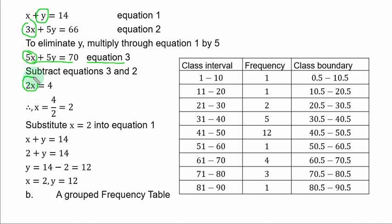70 minus 66. You have 4. Divide both sides by 2, x is equal to 4 over 2. And that is 2. To get y, you simply replace x with 2 in equation 1. You can as well use equation 2. Equation 1 is this. And x is 2. You have 2 plus y equal to 14. Collect like terms. y is equal to 14 minus 2. And that is 12. Therefore, x is equal to 2. y is equal to 12.